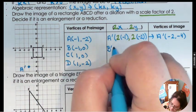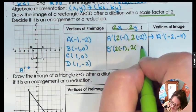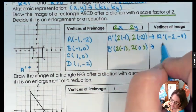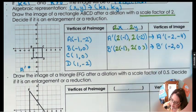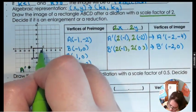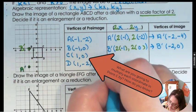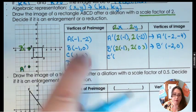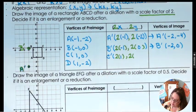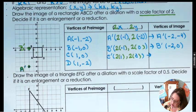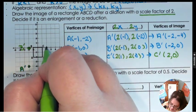For B prime, we take each coordinate and multiply by 2: 2 times negative 1 and 2 times 0, which gives us (-2, 0). So B prime is at (-2, 0). For C prime — C used to be (1, 0) — so 2 times 1 and 2 times 0 gives us (2, 0). Over 2, up 0, that is C prime.